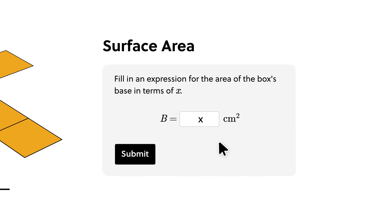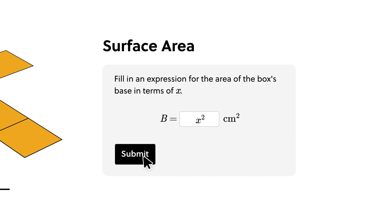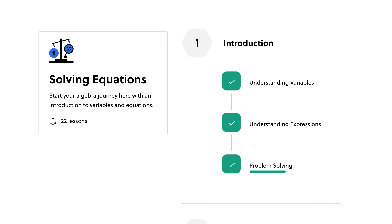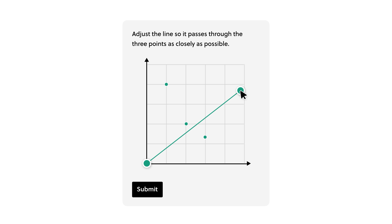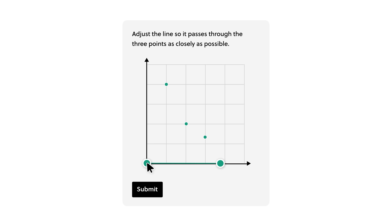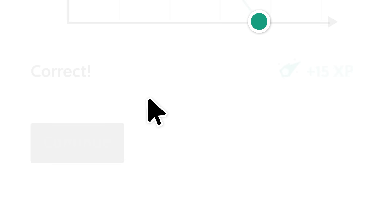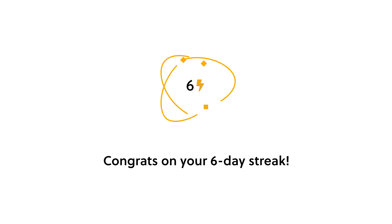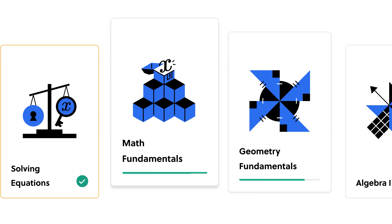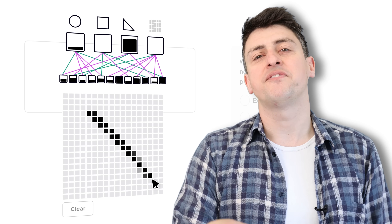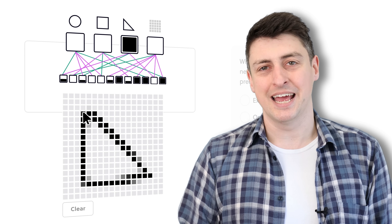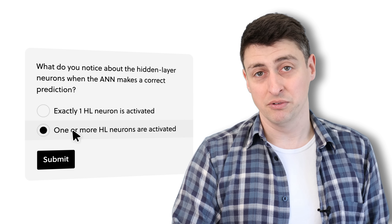Quite simply, Brilliant is the best place to learn skills in maths, data science, programming, and science. You learn by doing — being introduced to a concept and then immediately putting it into action with interactive exercises designed by an award-winning team of teachers from MIT, Google, Microsoft, and more.